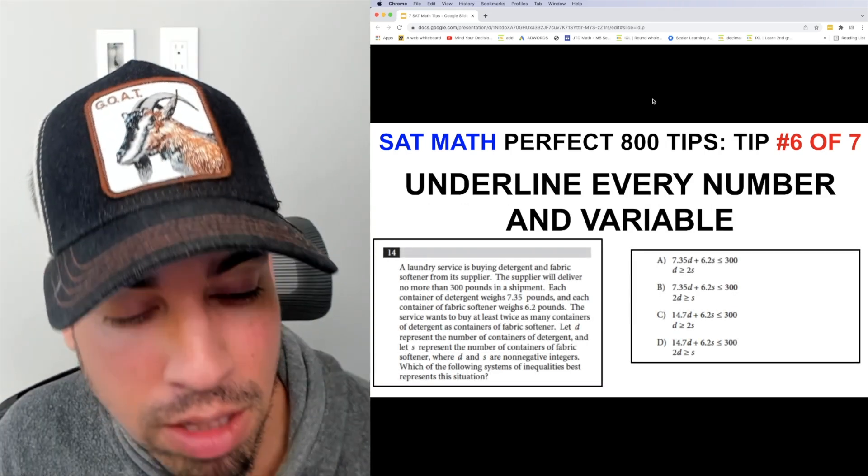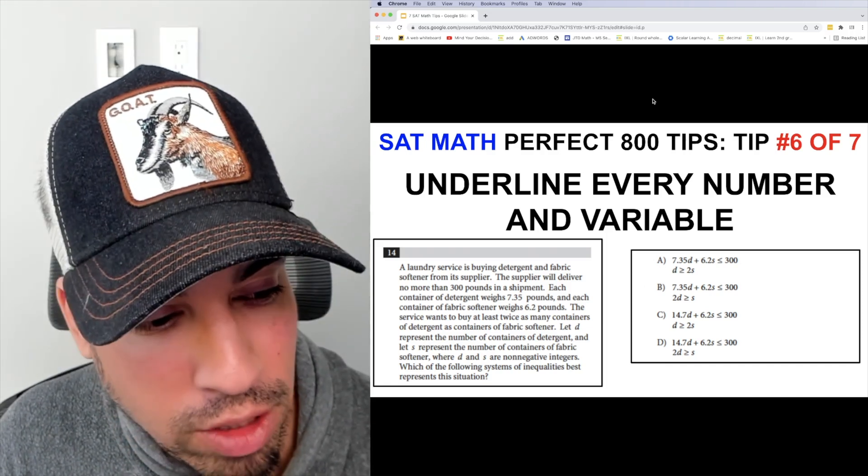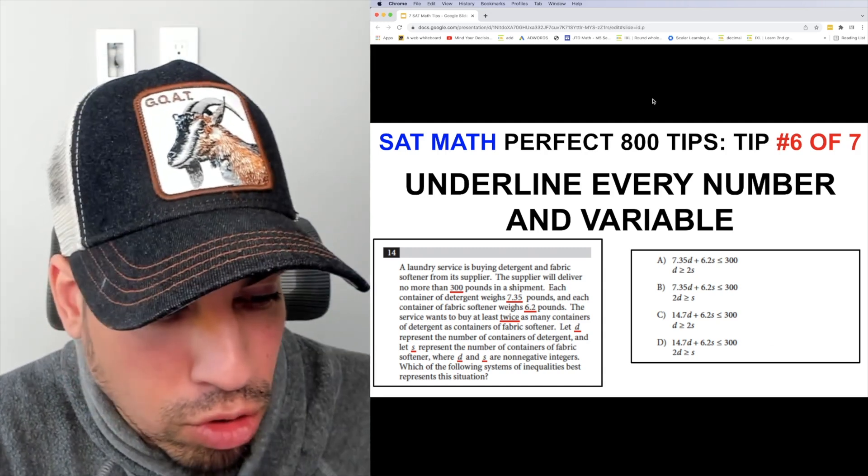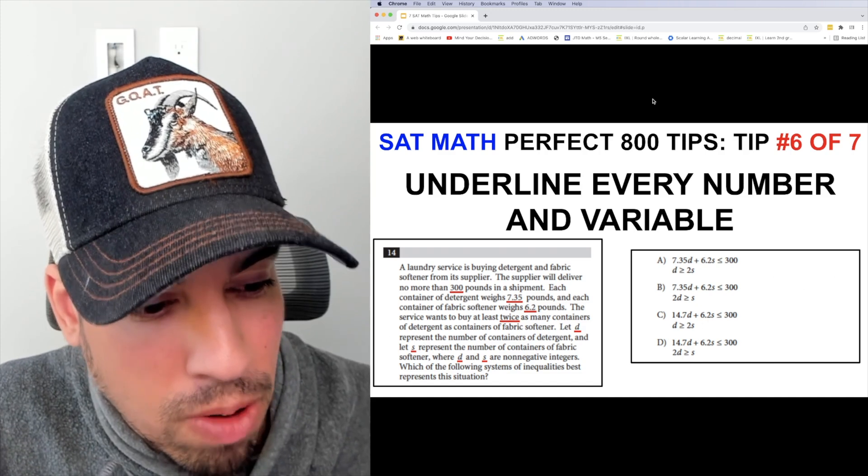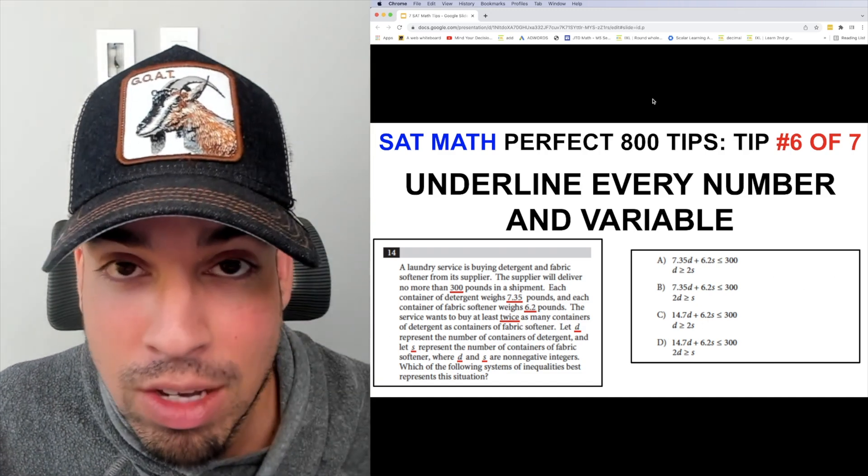In this problem there's tons of text and tons of numbers and variables that you need to extract. So here's everything underlined. Now I can see, okay, I've got D, I've got s - those are my non-negative integers. I know what they are. I've got the 300, the 7.35. Everything is sort of out there in the open now for me.